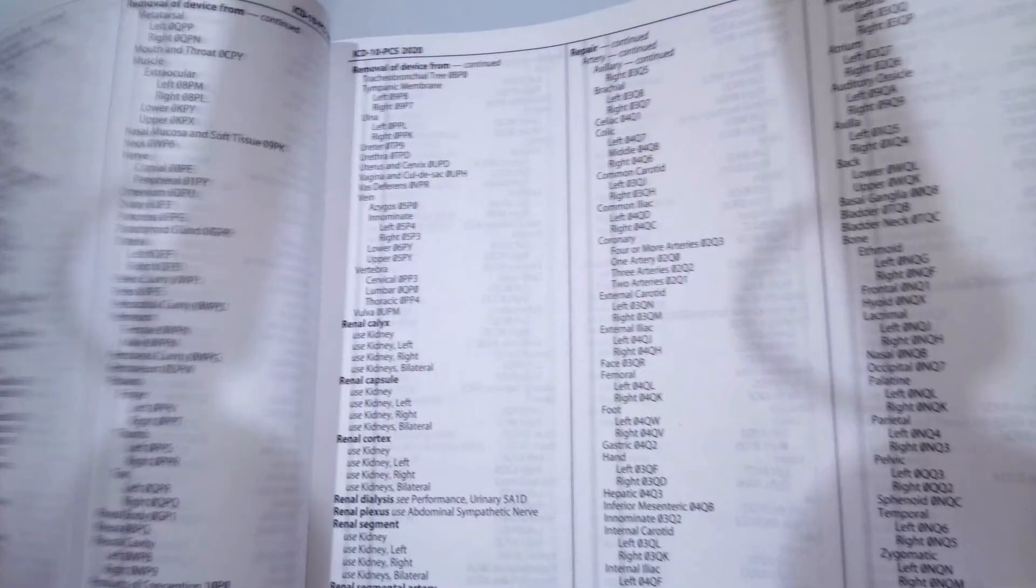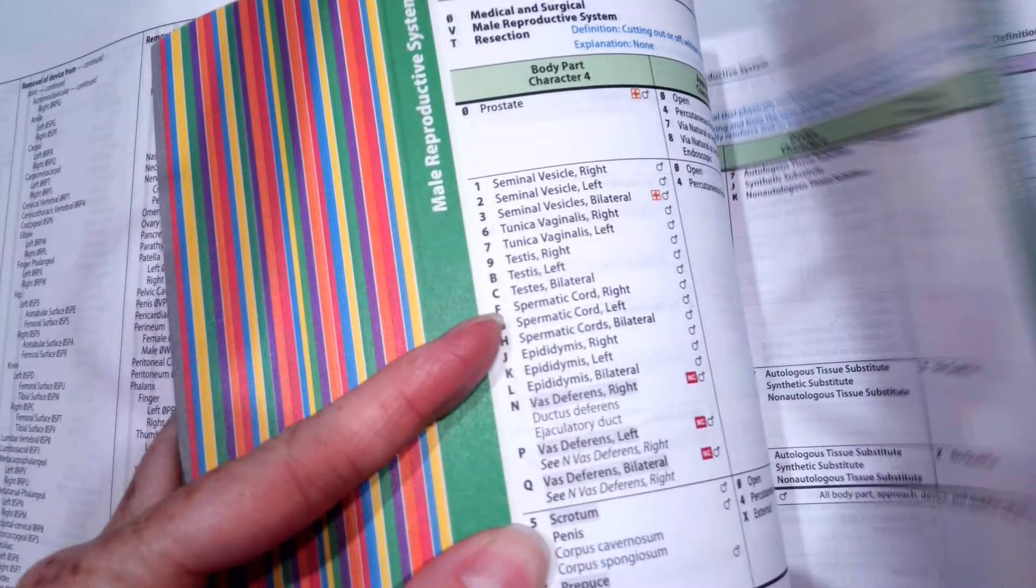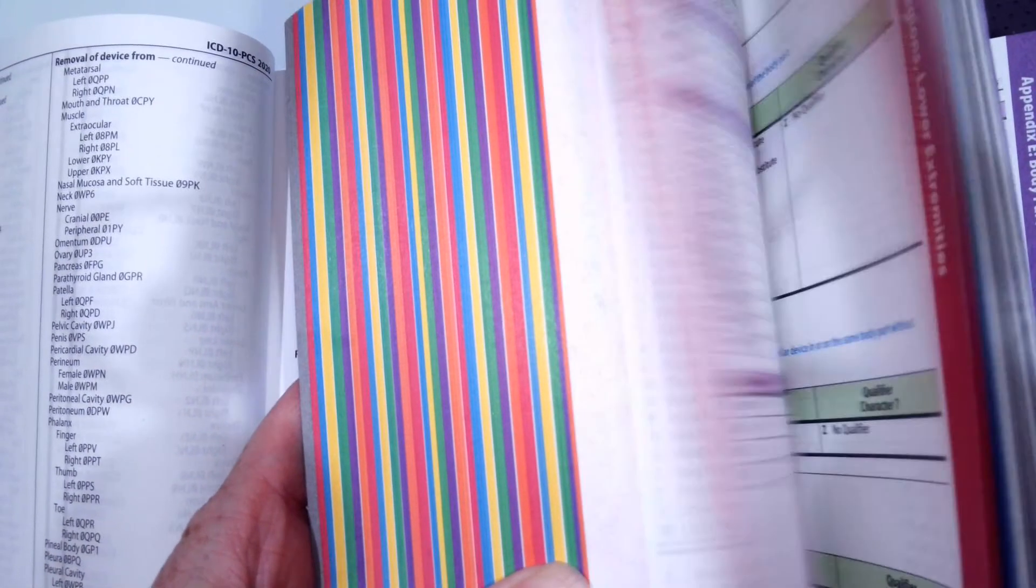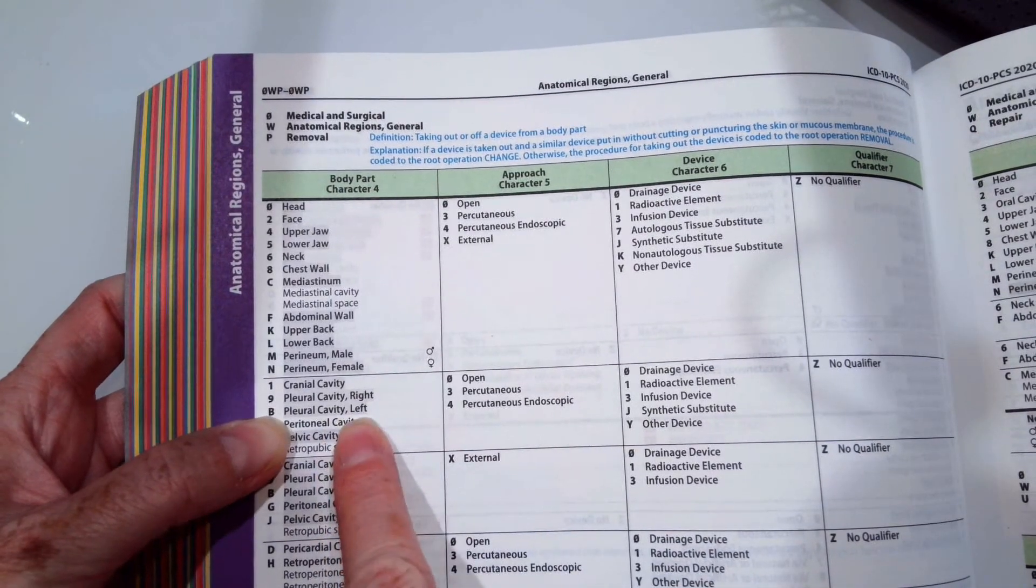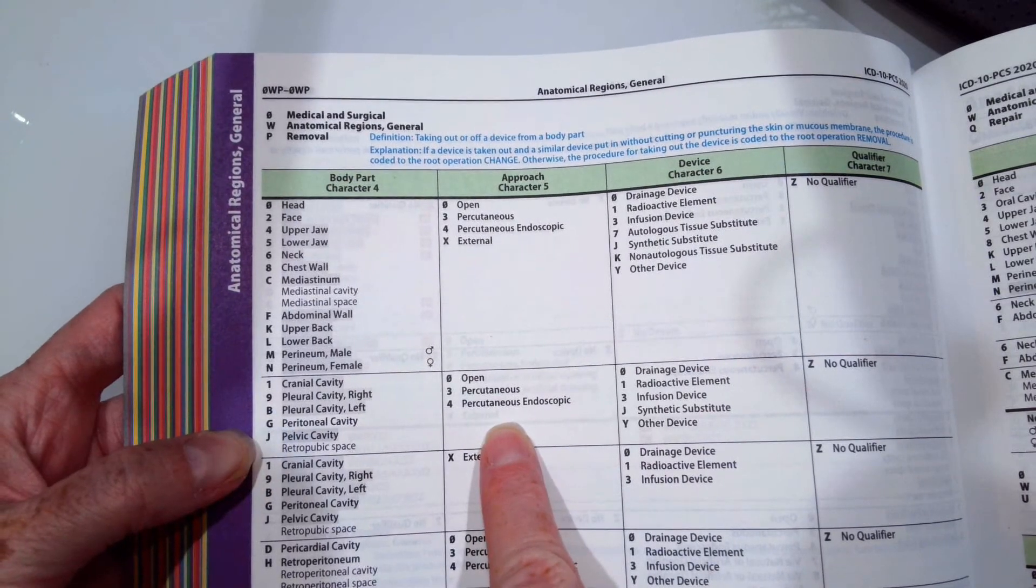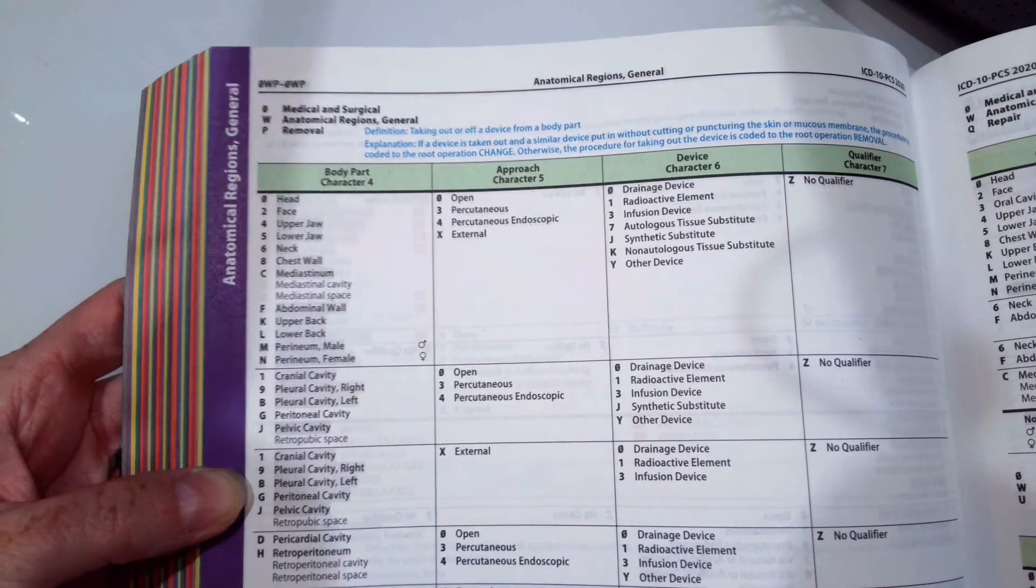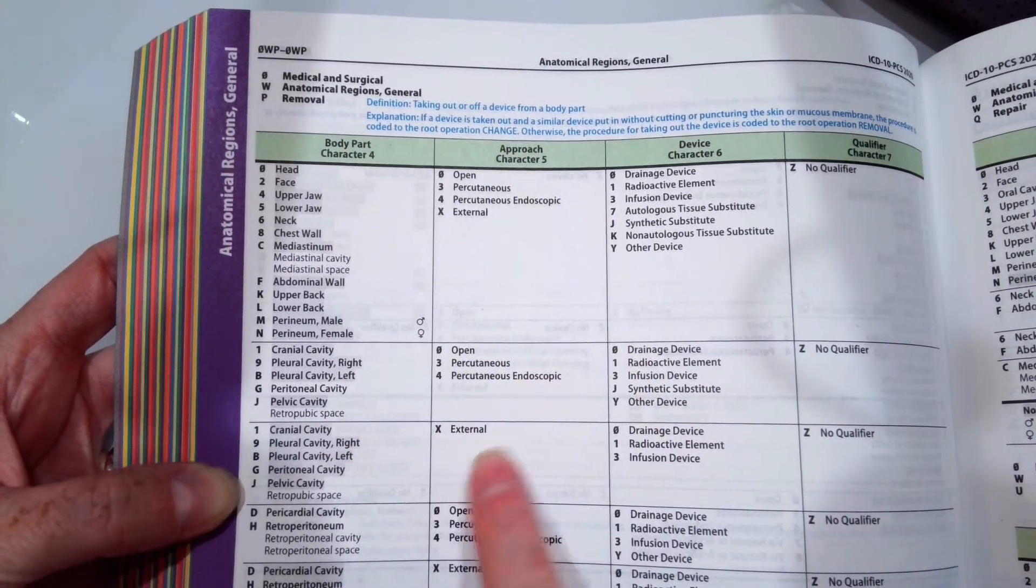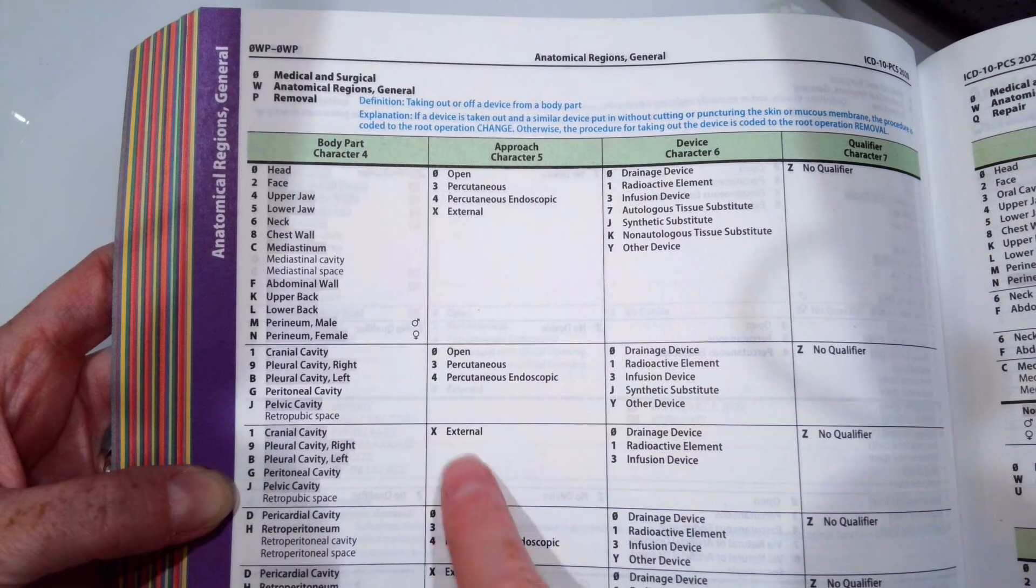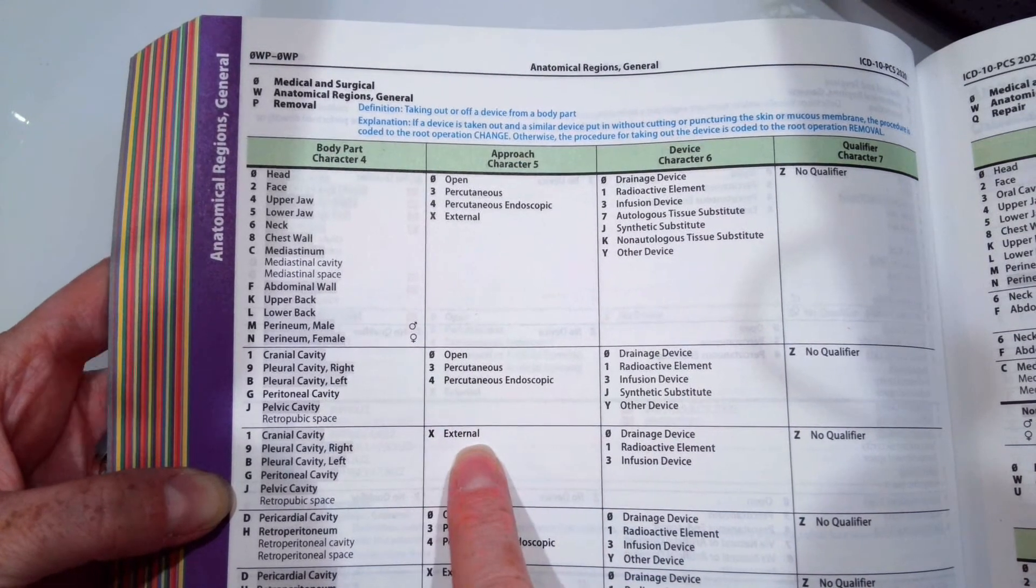Now let's flip to that table, 0-W-P-B. You can see that B is in more than one row. So remember, once you're in a row, you have to stay in that row. So we're going to do a process of elimination by going to the fifth character. When they removed our chest tube, they just did it externally. They didn't have to cut in or make an incision or use a scope. So we're going to do external for our approach.